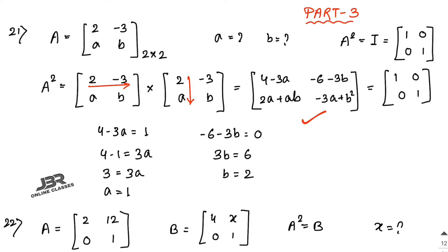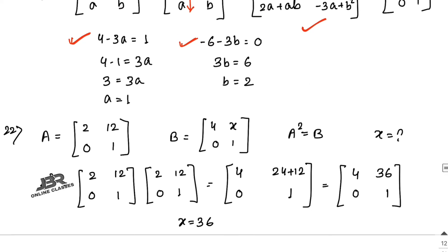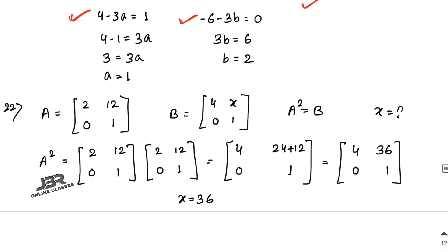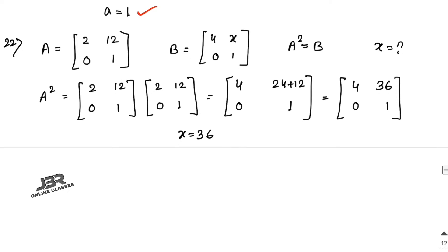Since A² equals I, set this matrix equal to [1,0; 0,1] and compare both sides. From the first equation: 4 minus 3a equals 1, so a equals 1. From the next equation: minus 3b minus 6 equals 0, so 3b equals minus 6, giving b equals minus 2. That is your answer.